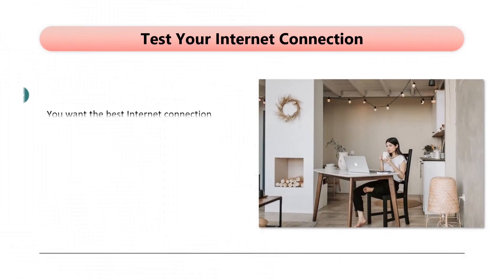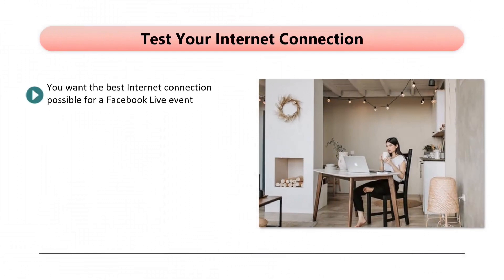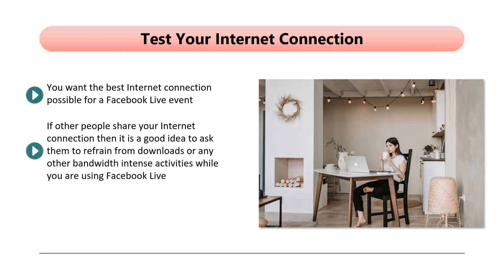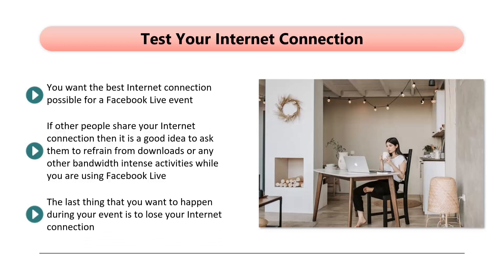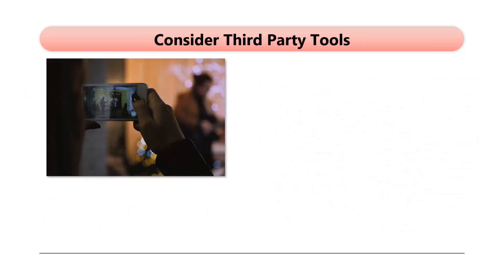Test your internet connection. You want the best internet connection possible for a Facebook Live event. Test your connection prior to commencing your live event. If other people share your internet connection, ask them to refrain from downloads or bandwidth-intensive activities while you are using Facebook Live. You can use a Wi-Fi booster if necessary. The last thing you want during your event is to lose your internet connection — if your Wi-Fi signal is weak, it can cause your video to cut in and out. It may be worth using a direct cable connection to your router to eliminate the use of Wi-Fi.